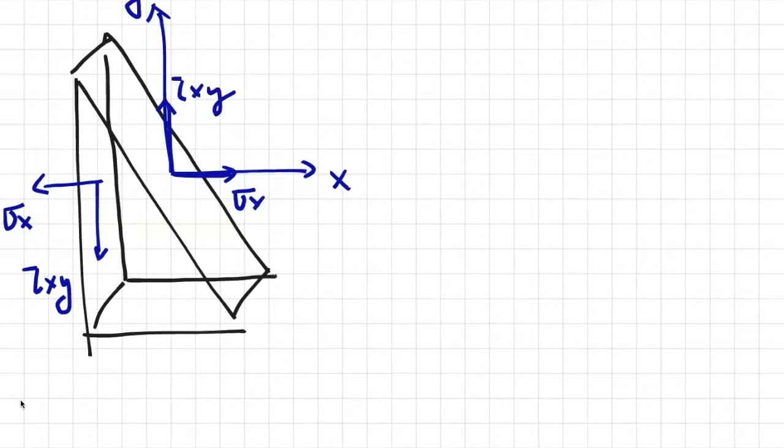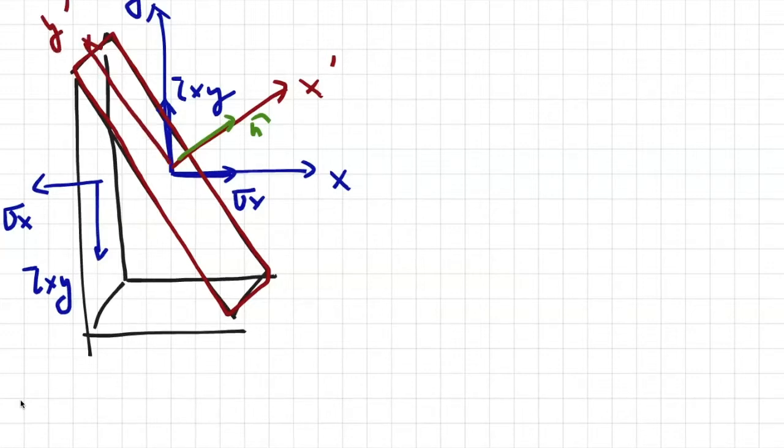And then we want to analyze the stresses on this cross-section area. So what we do is we need to rotate the coordinate system so that the x-axis would line up with the unit normal vector to this cross-sectional area. And then the y-axis would be rotated to this direction, and would be lined up with the n-prime unit vector shown here. So this is done by rotating this coordinate system by an angle theta counterclockwise.